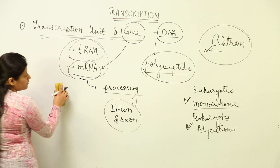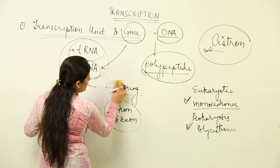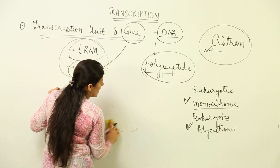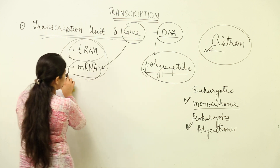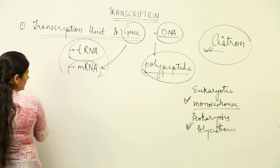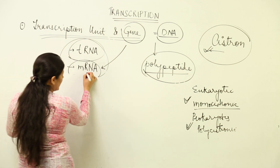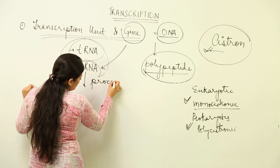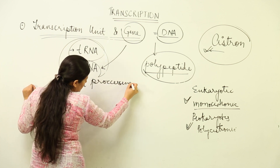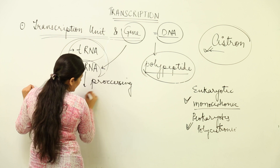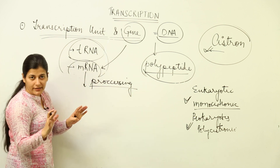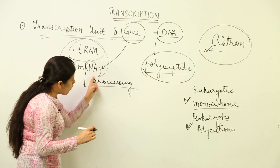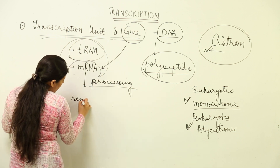When mRNA is being produced in eukaryotes, what happens is the cistron gives rise to mRNA, and that mRNA undergoes processing stages to form the final RNA. This processing involves the removal of intermediate sequences.